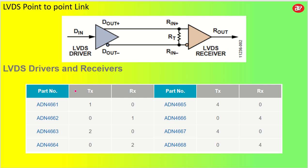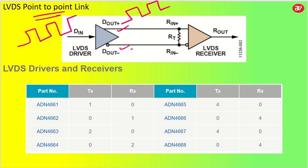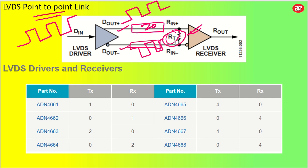Now let us get into the block diagrams and operations of LVDS. In an LVDS point-to-point link, we have a data input — let's say a clock source or data signal coming in as a pulse — which gets converted to D plus and D minus output, so it gets converted to positive and negative differential form. Then there will be a receiver. There is a termination resistor which is used for matching the data line. The line impedance Z0 must match your RT node. The receiver converts this differential signal back to the actual signal at the output end.